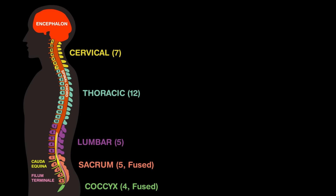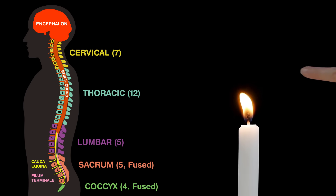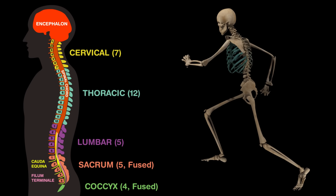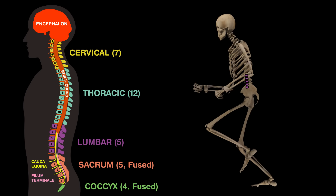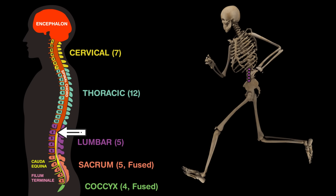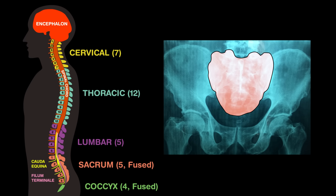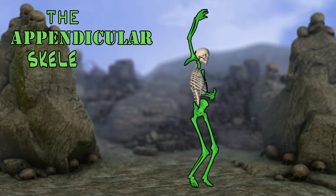The cervical vertebrae make up your neck. The spinal cord keeps your reflexes on deck. The ribs are supported by thoracic vertebrae. Lumbar ones are at the end of the spinal cord pathway. Five sacral vertebrae are fused to form your sacrum, which holds your upper body and is found in your lower back. Below it is the coccyx, or the tailbone — in humans the coccyx has not really grown.